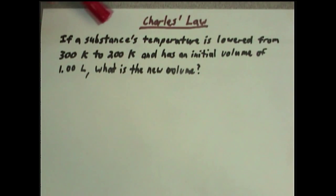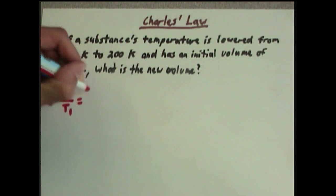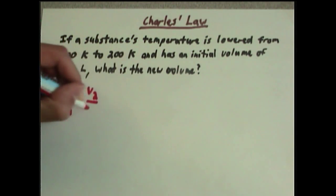If a substance's temperature is lowered from 300 kelvins to 200 kelvins and has an initial volume of 1 liter, what is the new volume? Now, if you notice, this problem is an example of Charles' Law, because we have volume and temperature. And if you recall, the equation for Charles' Law is V1 over T1 equals V2 over T2.